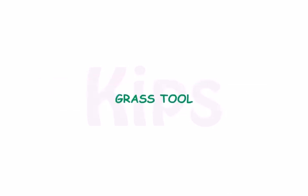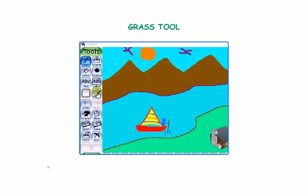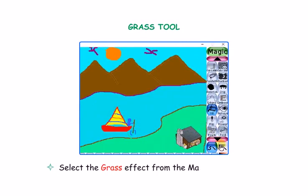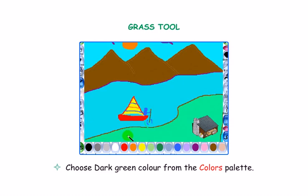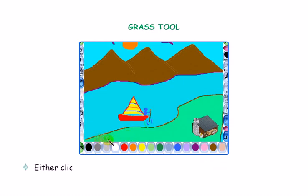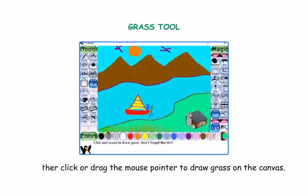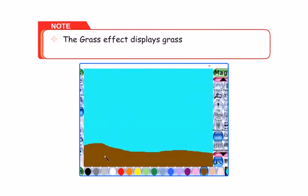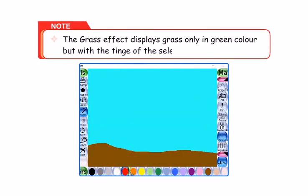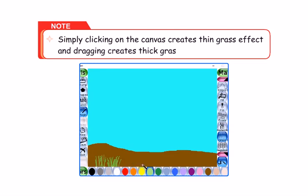Let us learn about the Grass Tool. It is used to draw grass in your canvas. Select the grass effect from the magic sub-toolbox and choose dark green color from the colors palette. Either click or drag the mouse pointer to draw grass on the canvas. The grass effect displays grass only in green color, but with the tinge of the selected color. Simply clicking on the canvas creates a thin grass effect and dragging creates a thick grass effect.